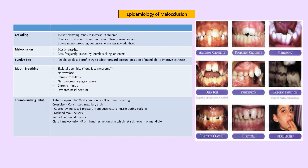Mouth breathing habit can lead to open bite, long face, and tonsillitis with narrow oropharyngeal spaces. Chronic rhinitis, deviated nasal septum, and adenoids are common causes, especially in children. Thumb sucking results in anterior open bite as the most common outcome; constant sucking leads to constricted maxilla through hyperactive buccinator pressure, responsible for developing posterior cross bite, along with proclined maxillary and retroclined mandibular incisors.